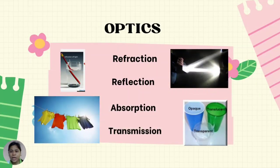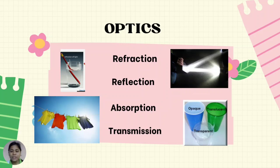In the previous lesson, you learned how light interacts with different materials. You also learned that optics is the study of refraction, which refers to the bending of light as it passes through different materials; reflection, which refers to the bouncing back of light when it hits an object; absorption, which refers to a material taking in light and not reflecting it back; and transmission, which refers to the passing of light through some materials. This time, you will learn the conditions necessary to make a bulb light up.